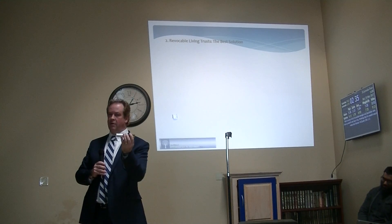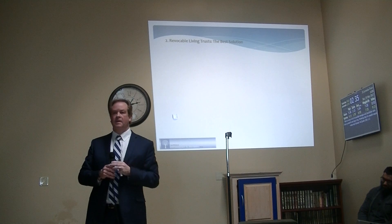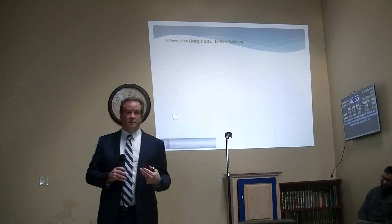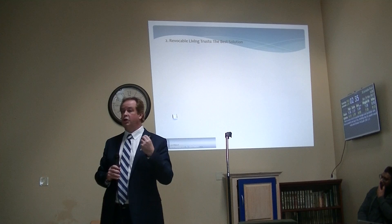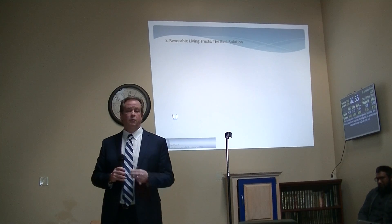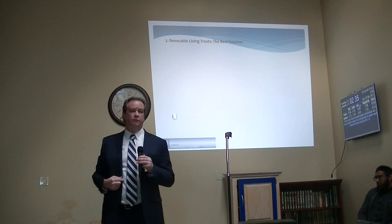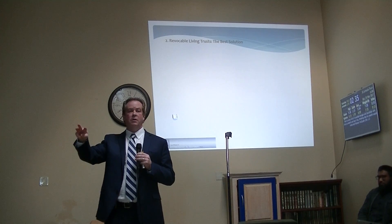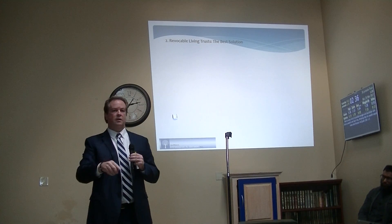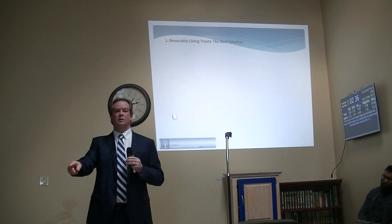I mean you both own it, and the last person who's alive gets it. In Washington, it's most common to be a tenant in common, which means you own 50%, I own 50%. If three of us own it, you own a third, I own a third, you own a third. Four of us own it — quarter, quarter, quarter, quarter.